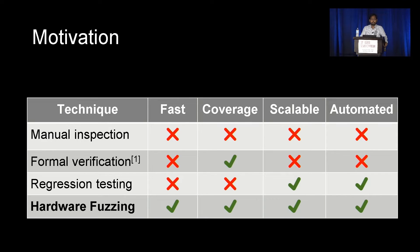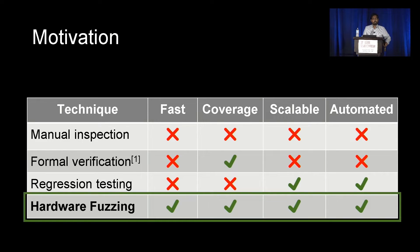The rising severity of hardware vulnerabilities has motivated our community to research newer and more efficient bug detection techniques that complement existing traditional hardware verification techniques like manual inspection, formal verification, and regression testing. These existing techniques either do not scale well to large designs, are not automated, or are not efficient enough to detect bugs in modern and complex hardware. Hardware fuzzing, on the other hand, is a new and promising approach in hardware verification which can scale well to large designs, can be automated, and can penetrate into complex designs to find bugs.